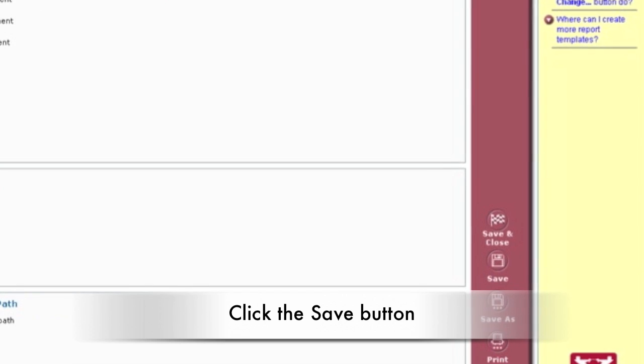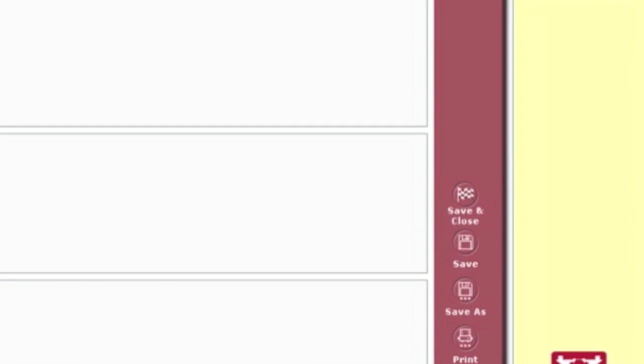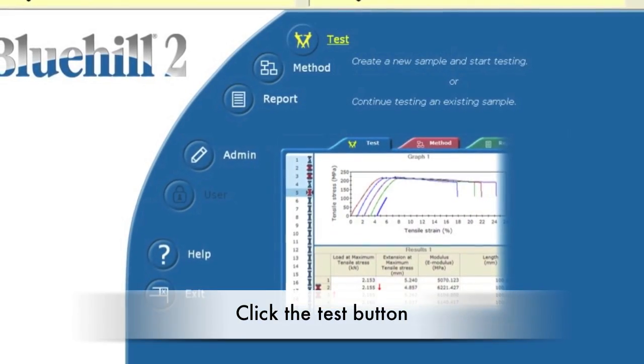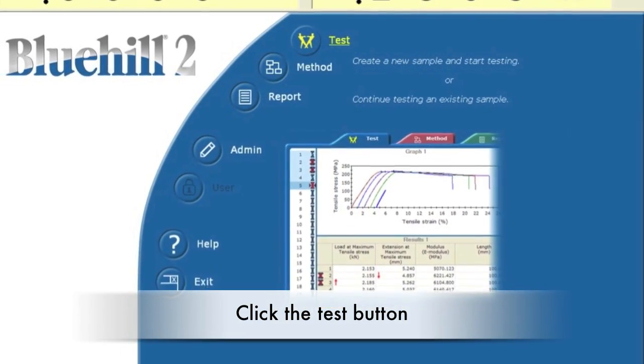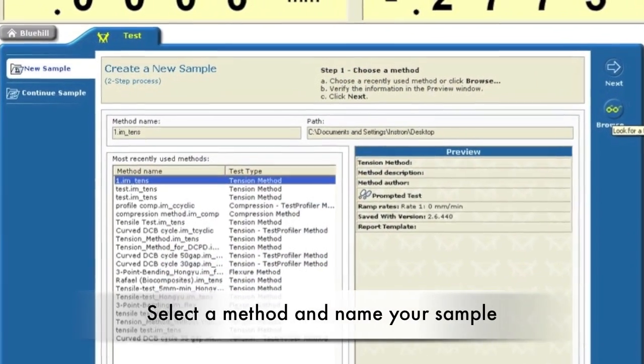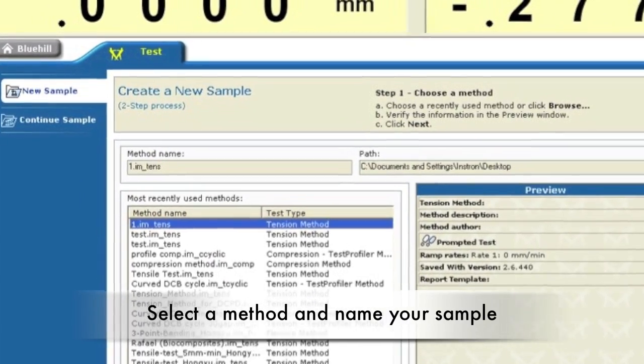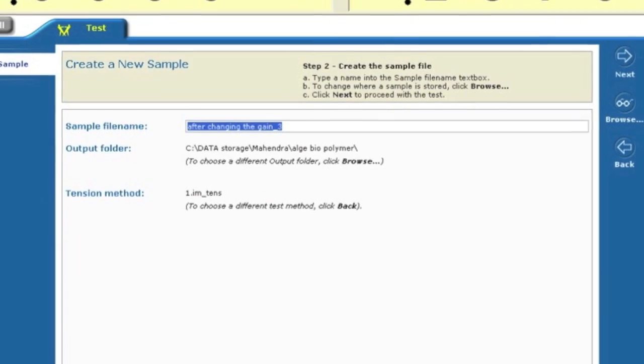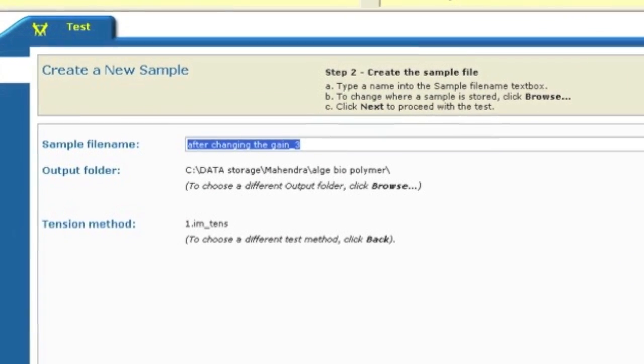Click the save button when finished so the method can be used again. Save your file in your folder of the Instron data folder. Next, click the test button. Choose the method you would like to use by clicking browse and finding your file, then press next. Make sure your results are saved in the right folder, then name your sample, click save, and click next.